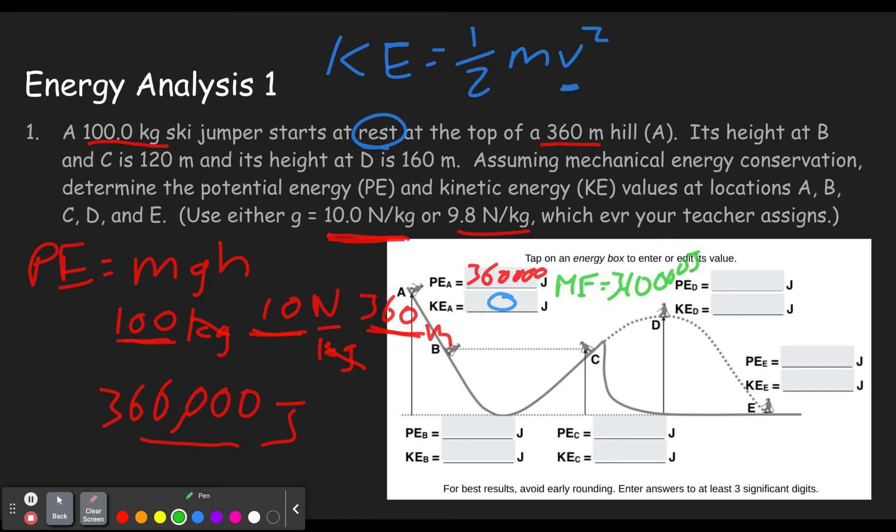So we are assuming mechanical energy conservation, meaning there won't be friction that will cause this ski jumper to create heat between the skis and the snow. In reality, of course, there is some of the energy will be lost to heat, sound, other things like that. But in this case, we're pretending complete mechanical energy conservation so we can see the concept here.